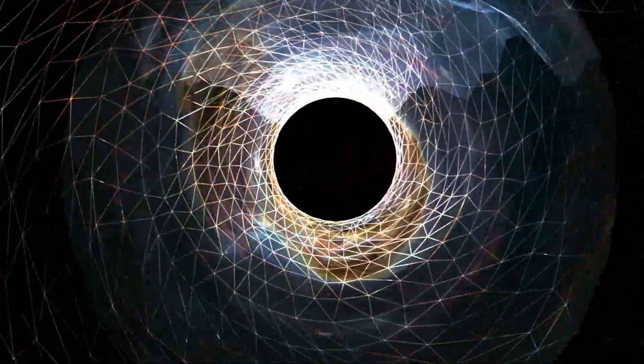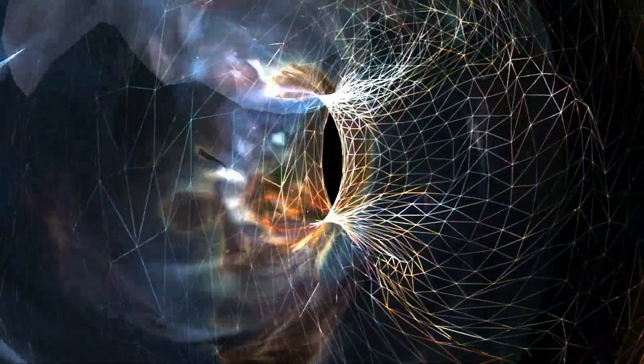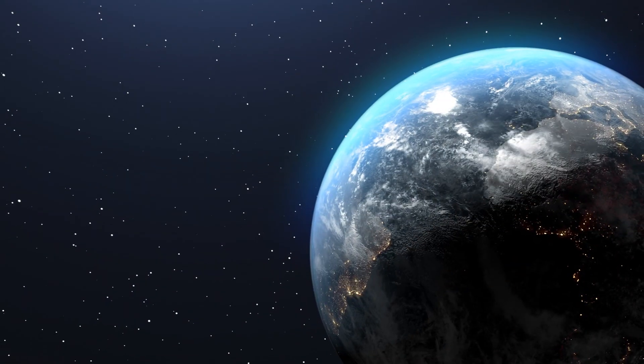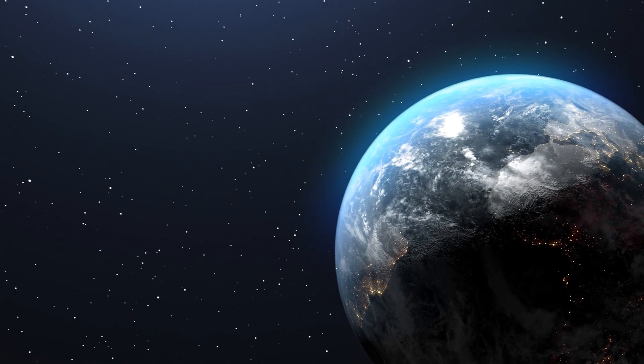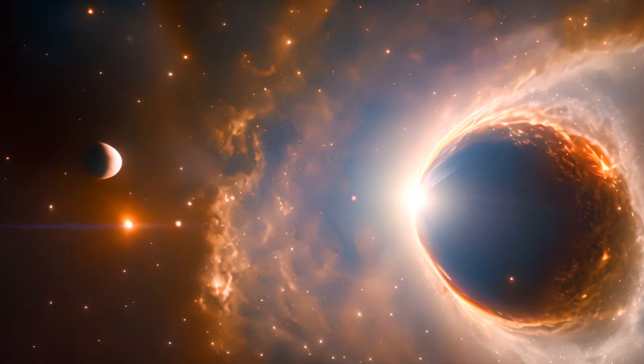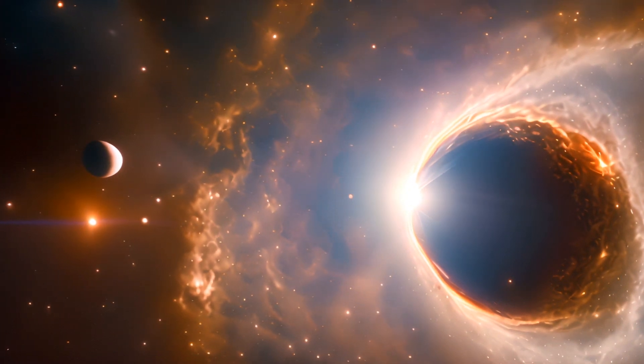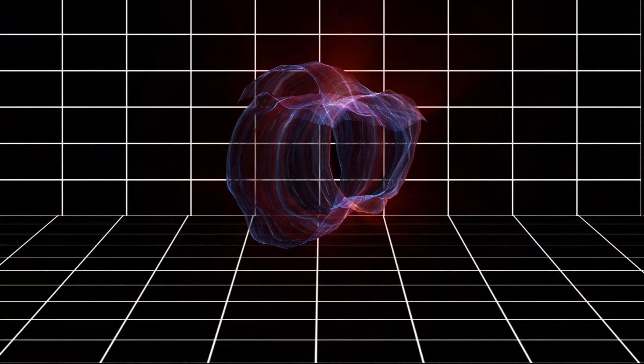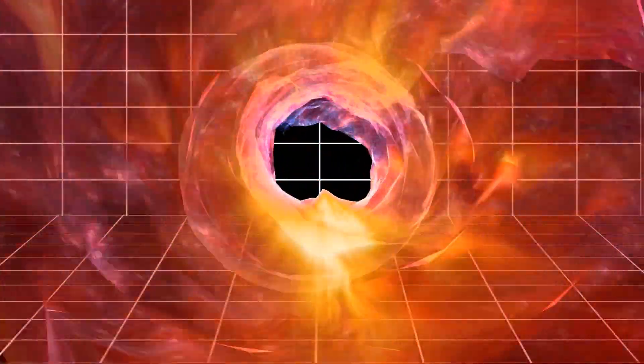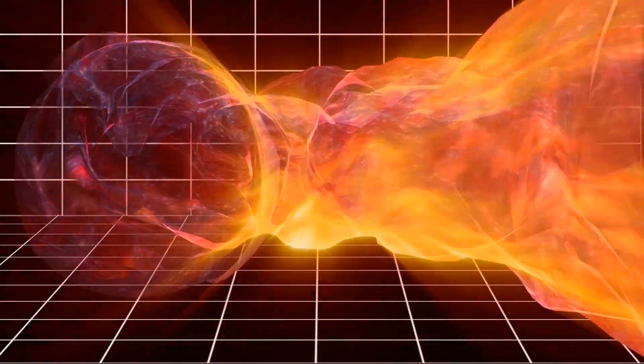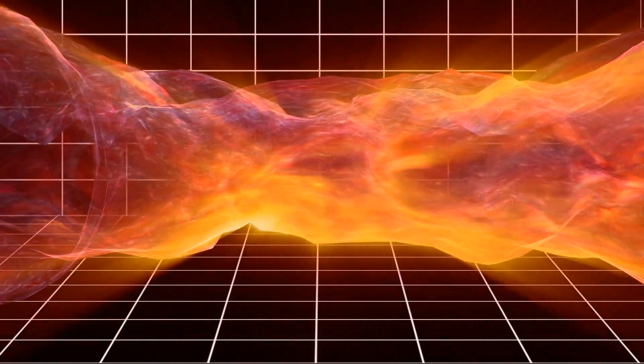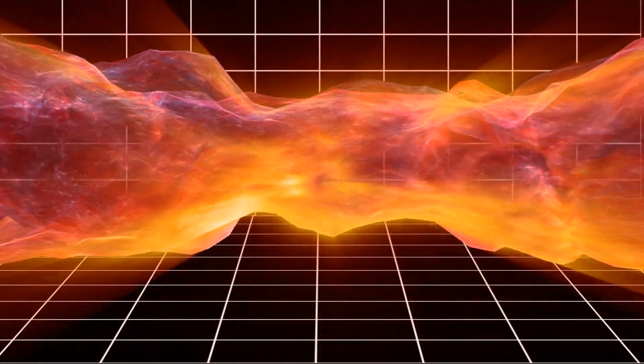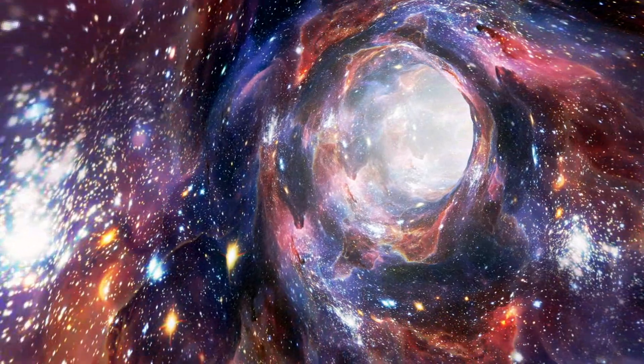You might be wondering, how does this happen? Well, to understand that, we need to delve into the concept of space-time curvature. According to general relativity, massive objects like stars and planets curve the fabric of space-time around them. This curvature is what we perceive as gravity. Now imagine if you could bend this fabric so much that it folds onto itself, creating a tunnel between two points in space-time. This is the concept of a wormhole.